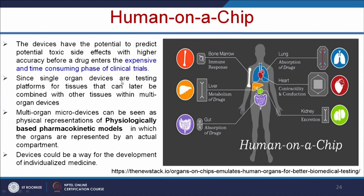Since single organ devices are testing platforms for individual tissues, they can later be combined with other tissues within multi-organ devices. Multi-organ microdevices can be seen as physical representations of physiologically based pharmacokinetic models in which organs are represented by actual compartments. These devices could be a way forward for the development of individualized or personalized medicine.